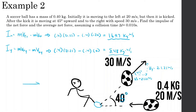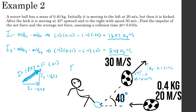Now combining the x and y impulse components using the Pythagorean theorem: the square root of 16.97 squared plus 8.48 squared gives a combined impulse of approximately 18.97 kilogram·meters per second. Then using impulse equals force times time, force equals 18.97 divided by 0.01, which gives approximately 1,897 newtons.